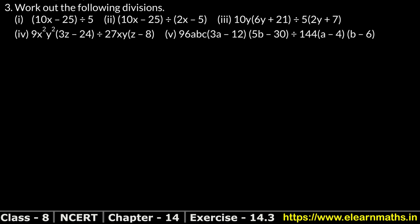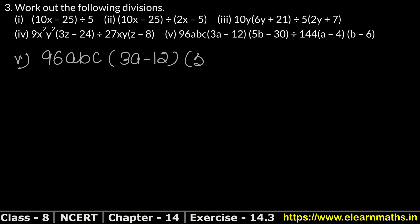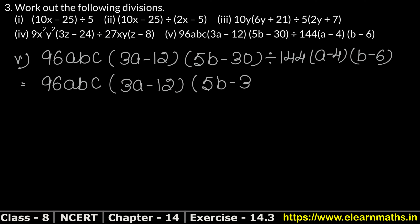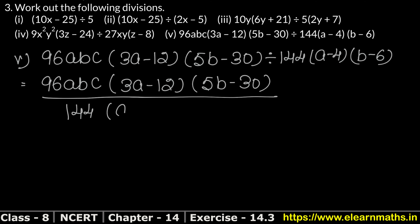Let's do the last part. The fifth part is 96abc times (3a minus 12) times (5b minus 30), divided by 144 times (a minus 4) times (b minus 6). Now we will try to simplify the constants 96 and 144 by cancelling common factors.